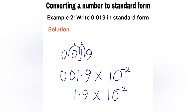To summarize: when converting to standard form, move the decimal point behind the first non-zero digit. If you move the decimal point to the left, you do not introduce a negative. If you move it to the right, you introduce a negative exponent. Now the next thing you'll see on your screen is an exercise for you to practice — the more you practice, the better you become.